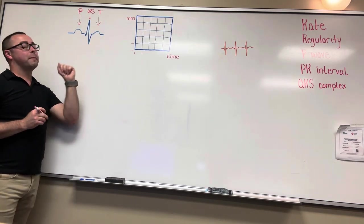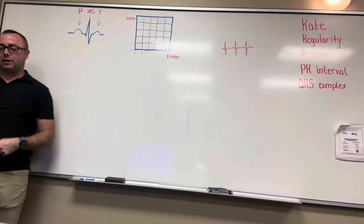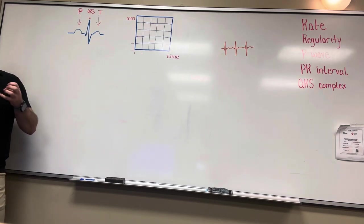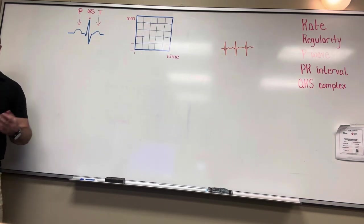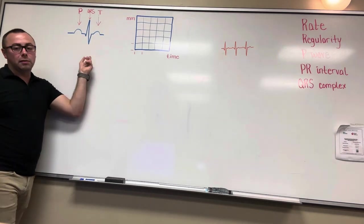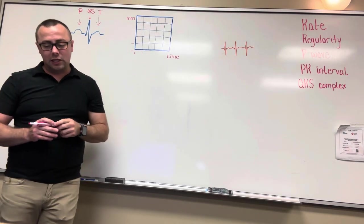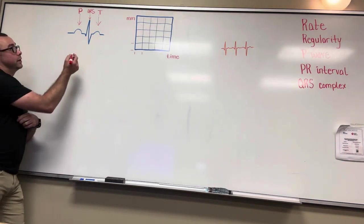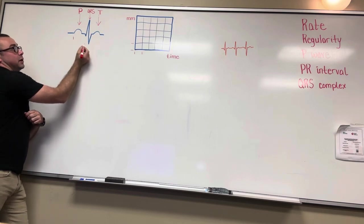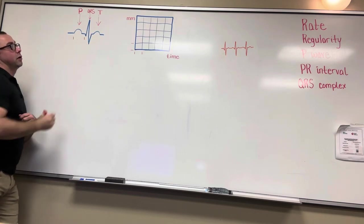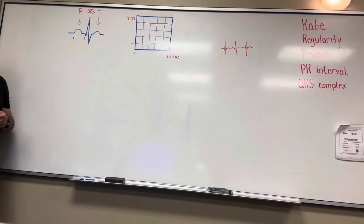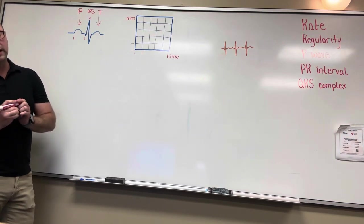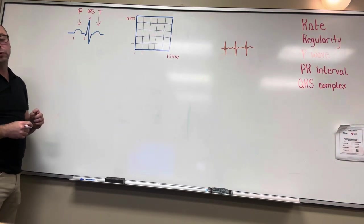Ventricular relaxation or repolarization. So depolarization, remember, is contracting. Repolarization is recharging or relaxing. So we've got our waves and our complexes. Let's talk about our interval — the PR interval. The PR interval is going to be from the beginning of your P wave to the beginning of your QRS complex, going left to right. That's a certain length of time, and that's important for when we start interpreting our rhythms.